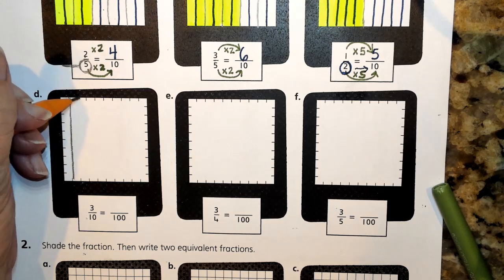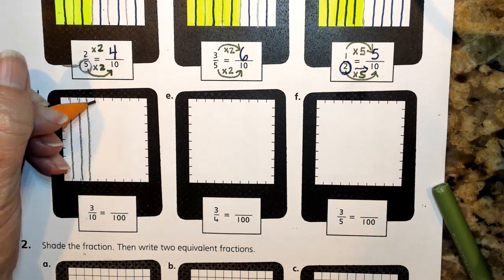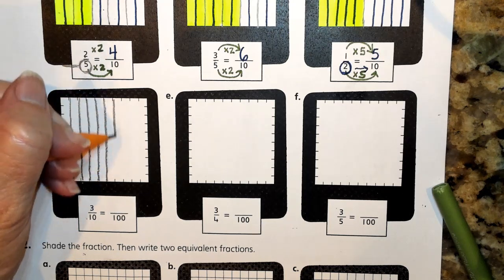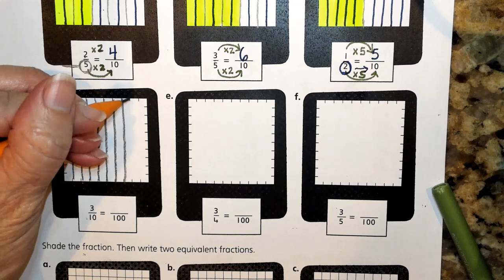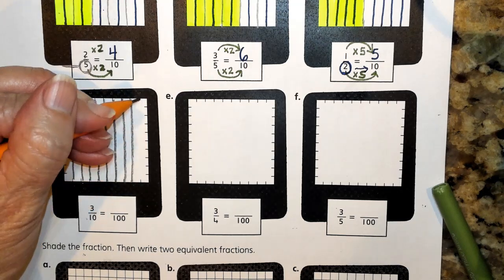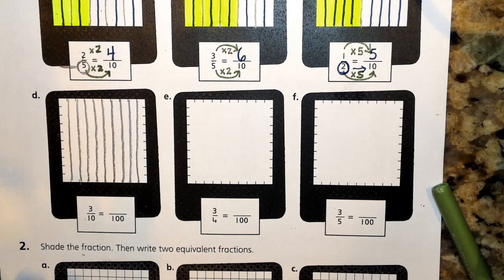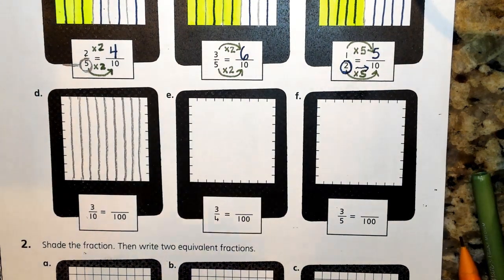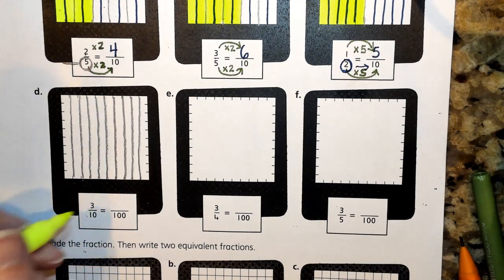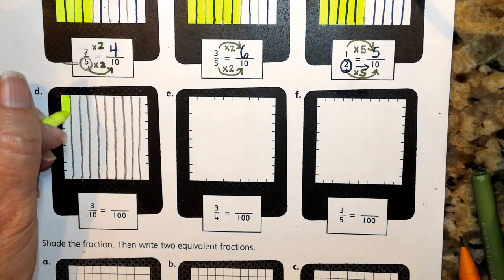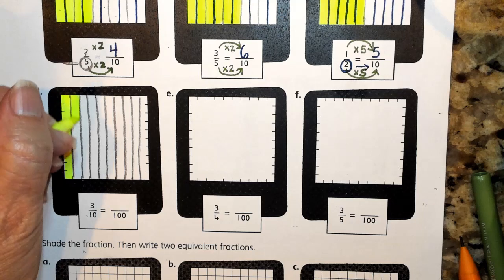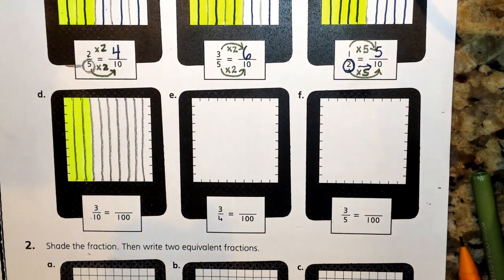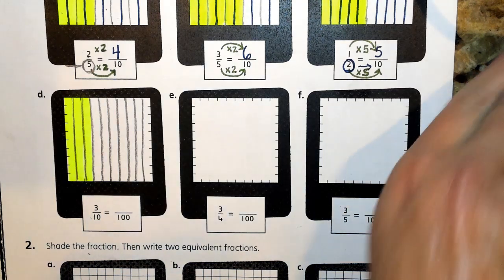I'm going to take this first picture and cut it into 10 equal pieces — one, two, three, four, five, six, seven, eight, nine, and ten. Nine cuts will give you ten equal pieces. I'm going to shade in three, since my numerator is three, so I'm shading this model to show three tenths.